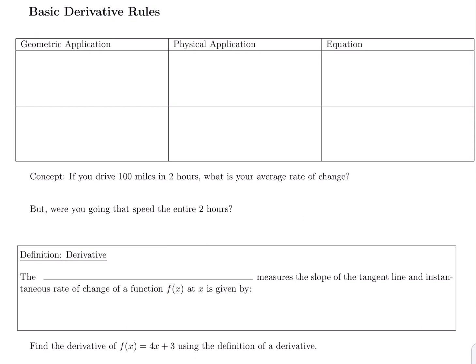Even though it's the same formula, it might be called something different depending upon the application you are using. In geometry, we would call it the slope of the secant line. In a physical application it would be called average rate of change. Two completely different names — slope of the secant line, average rate of change — but the same formula. Just like twins named John and Sarah, you might not think they're related, but they could be.